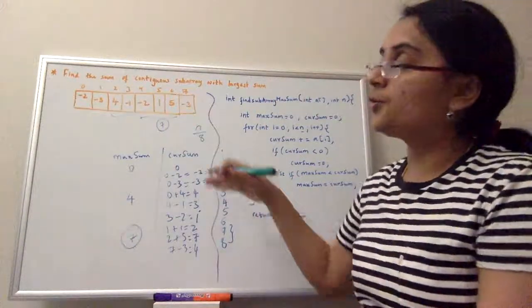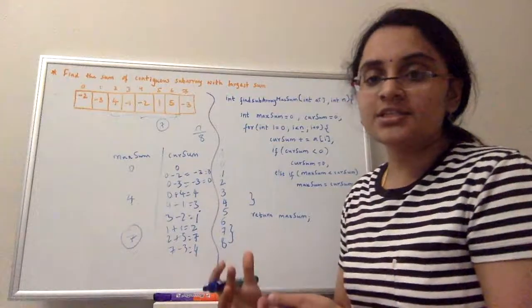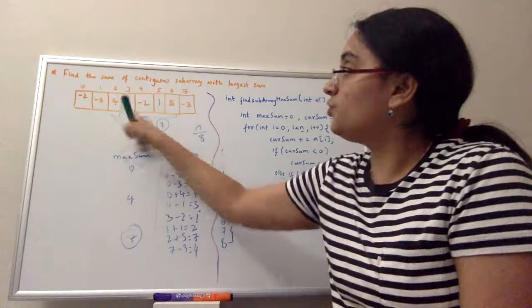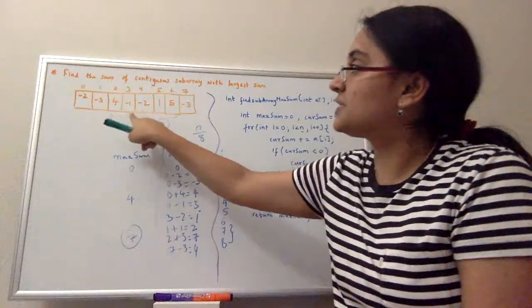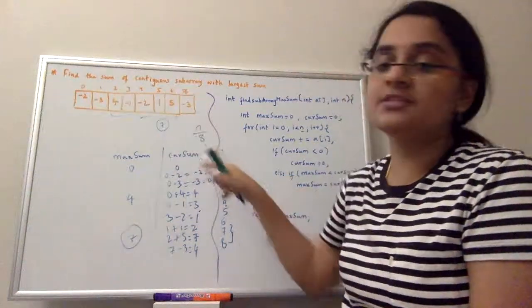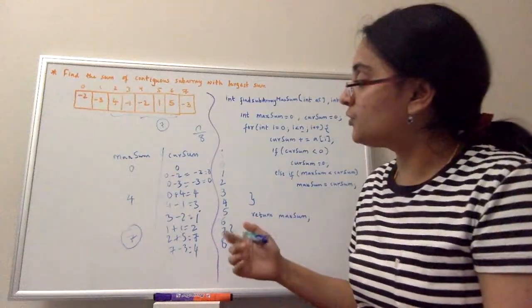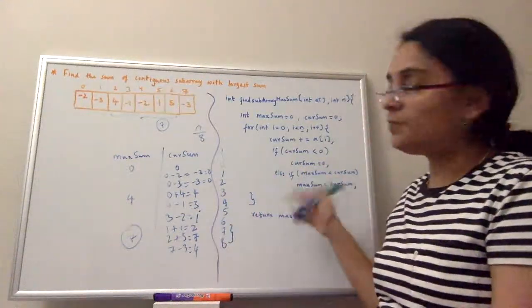So this is how we are going to return the largest sum of a contiguous subarray. See, if you can see this, 4 to 5 is 4 minus 1 minus 2, 1 and 5 is the subarray which is giving us the largest sum. So this is how we solve it programmatically.